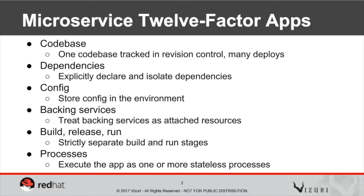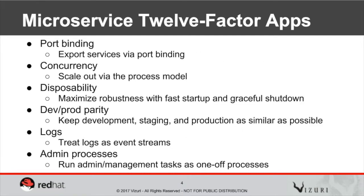You expose these microservices through port bindings. You want to be able to handle concurrency, so you want to be able to scale these microservices independently, so that way you can scale out just the components that require a lot of resources. Disposability — microservices should be able to be easily restarted and pick up where they left off.